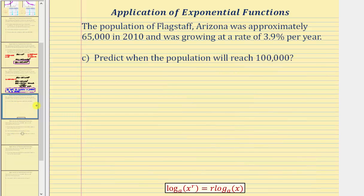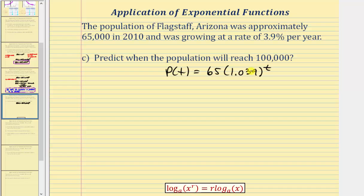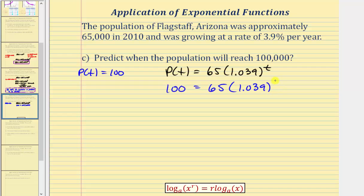For part c, we're asked to predict when the population will reach 100,000. Since p of t is in thousands, we need to solve the equation 100 equals 65 times 1.039 raised to the power of t. We'll solve this two ways: first graphically, in case you haven't learned about logarithms yet, and then a second way using logarithms.